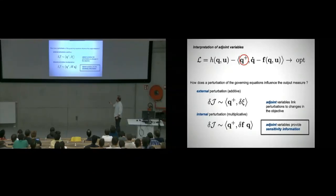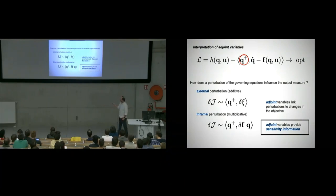Same thing here. If I change something in the equation itself, that impact here, again, is multiplied by Q plus, but also by Q. That's the only difference. Here, it's just Q plus. Here, it's a scalar product between Q and Q plus.